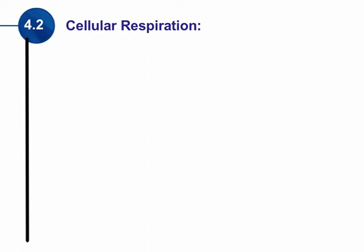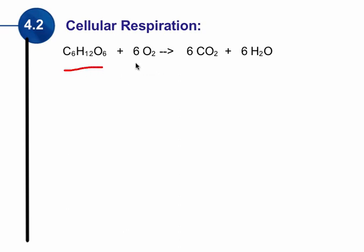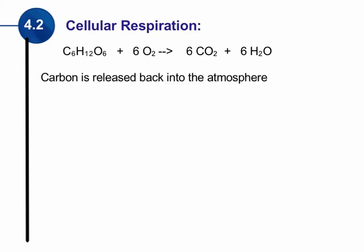The opposite of photosynthesis is cellular respiration — this is what we as human beings do when we breathe. We take glucose in our body, combine it with oxygen, and we get water and breathe out carbon dioxide. It's just the process of photosynthesis in reverse. This allows the carbon in carbon dioxide to be released back into the atmosphere through our breathing.